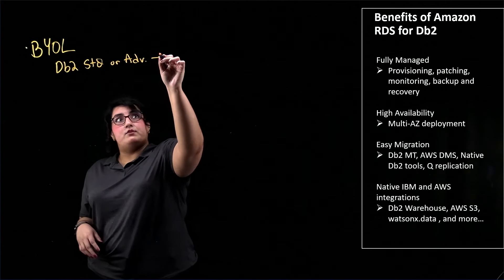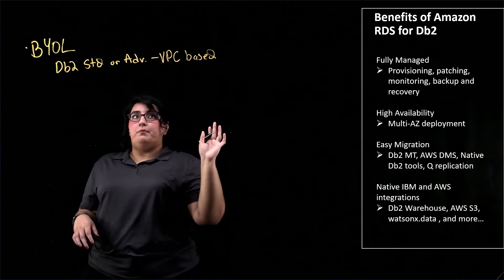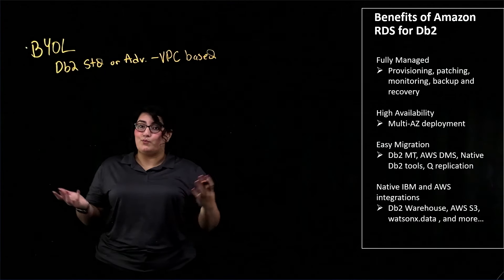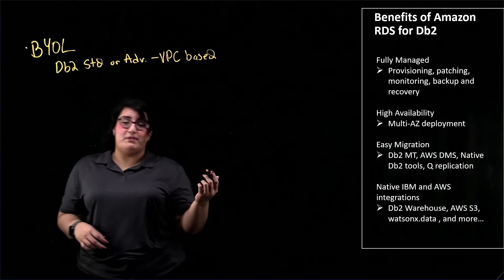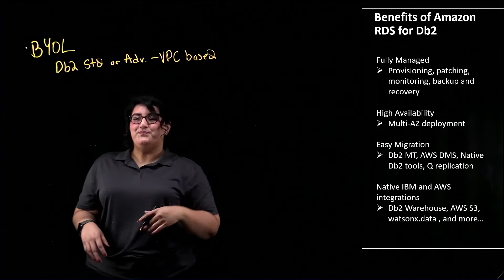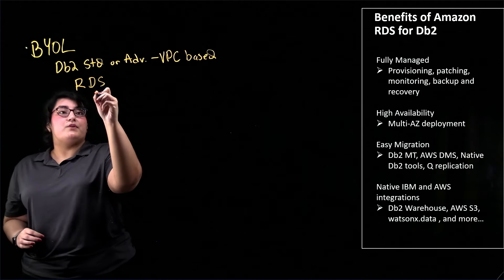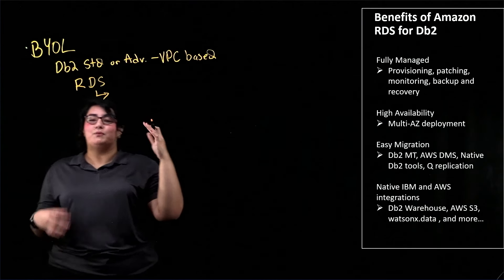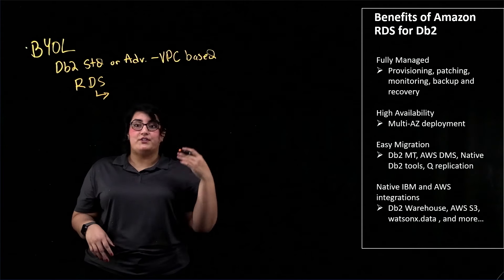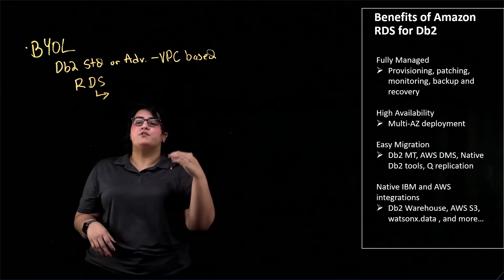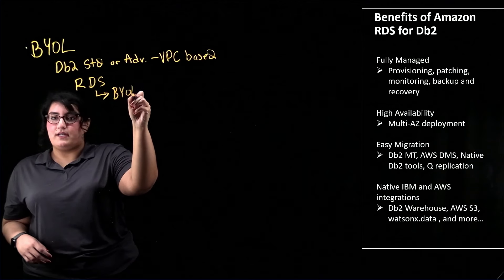One caveat: it does have to be a VPC-based license. In our context, VPC stands for Virtual Processor Core. If you're not sure what type of license you have, go ahead and reach out to your IBM sales rep and we'll get you squared away. To get started, go to the RDS console. From here, select Create Database. From Create Database, go ahead and select IBM DB2. From there, you'll have your licensing options, so go to the dropdown and select BYOL as your licensing option.